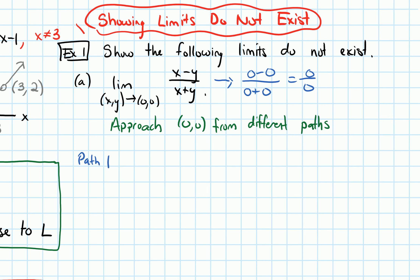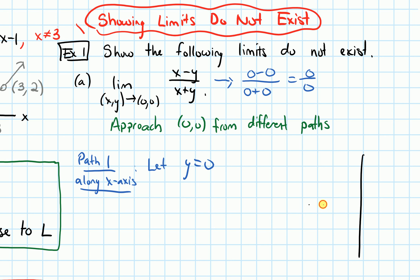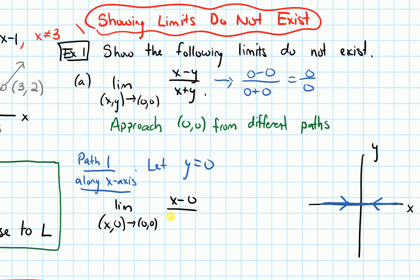So let's take path 1: I'm going to go along the x-axis, approaching (0,0) along a straight line. When I do that, I let y equal 0. Drawing the x and y axes, we're on the x-axis approaching the origin. So I take the limit as (x,0) approaches (0,0), and in the function's formula I plug in 0 for y. I get x minus 0 on top and x plus 0 on the bottom, so x over x, which simplifies to 1. When we approach the origin along the x-axis, the limit is 1.